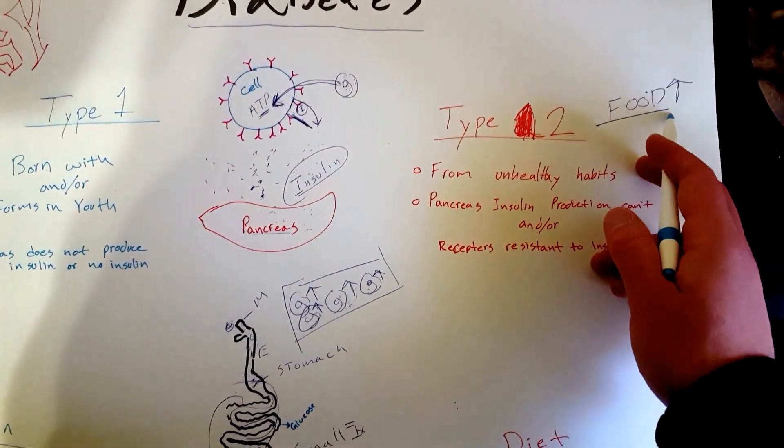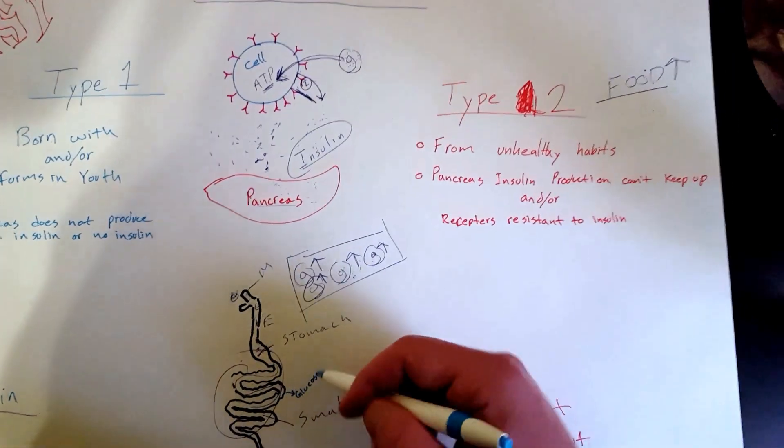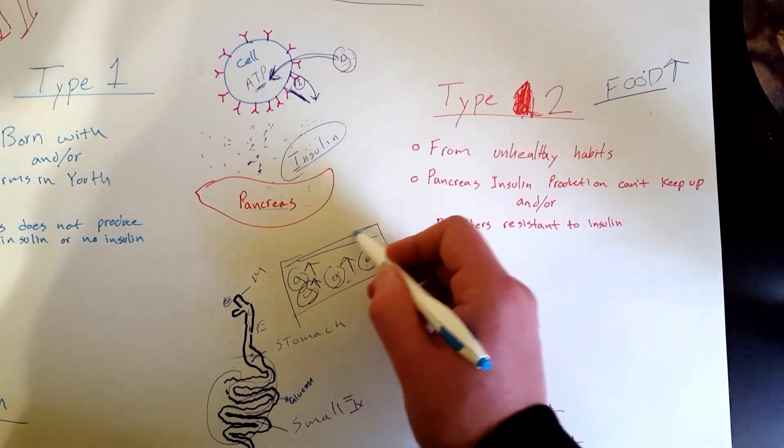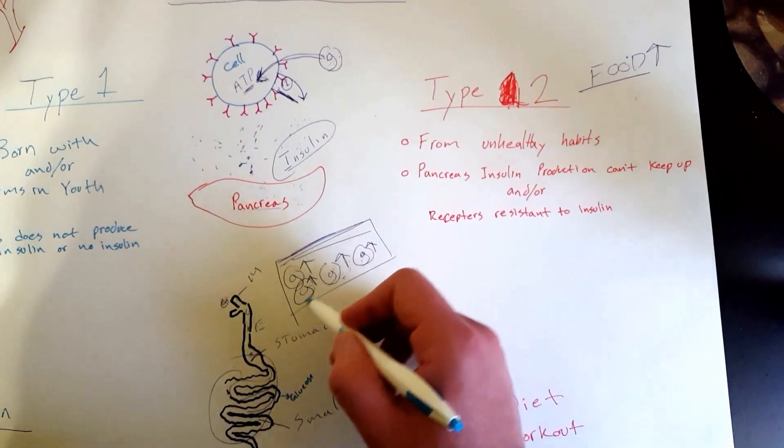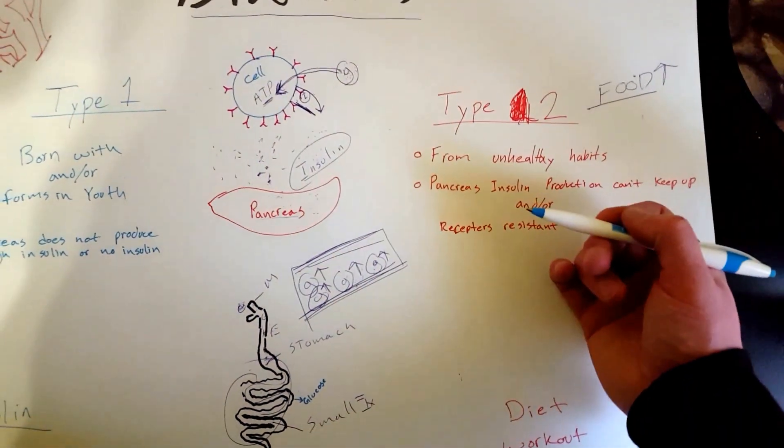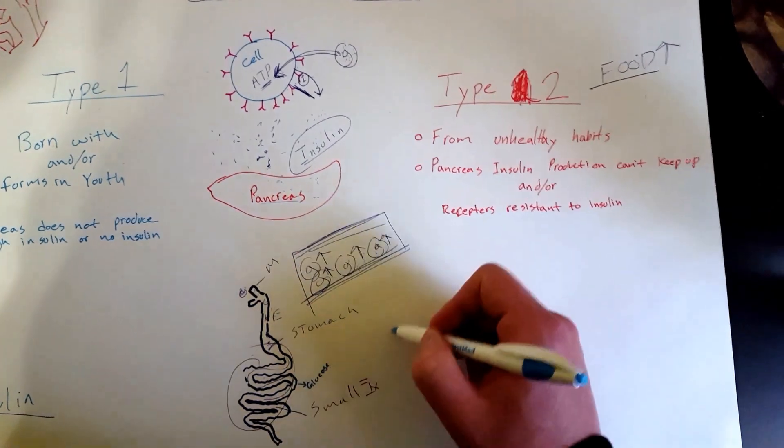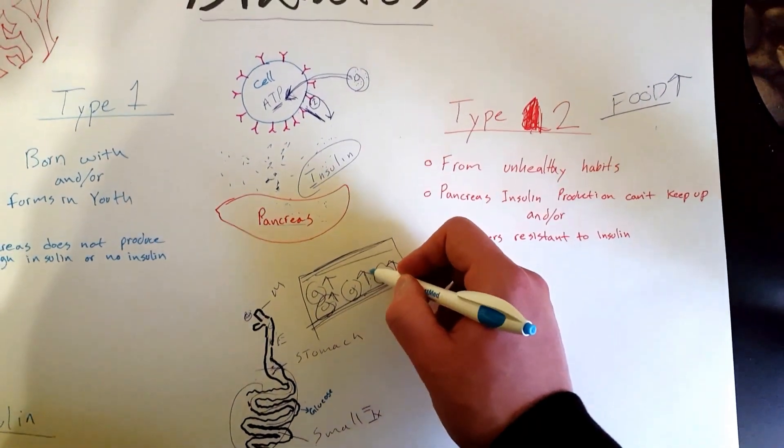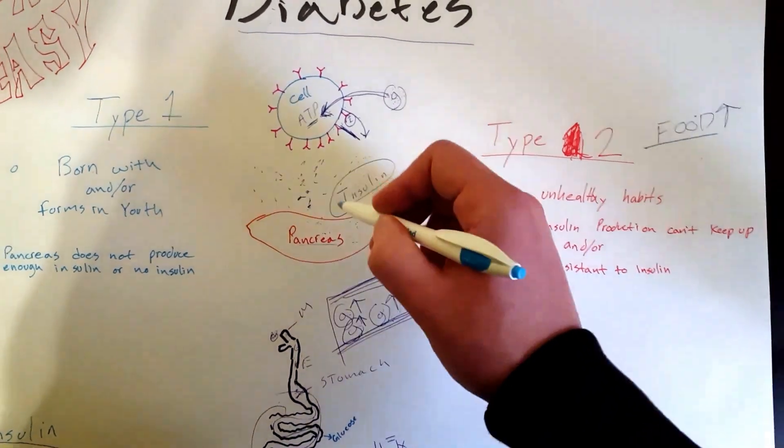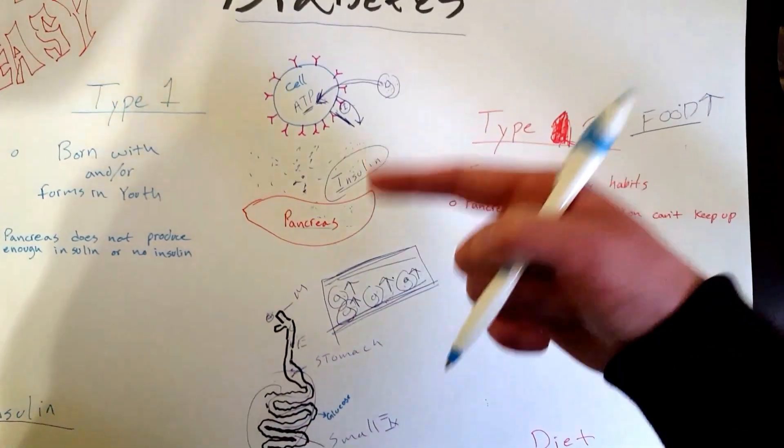If you're overeating too many carbohydrates, you're producing a lot of glucose. Let's say this is a container that represents your blood vessels throughout your body. If you're over-consuming carbohydrates and converting them into glucose, you're going to have a lot of glucose.